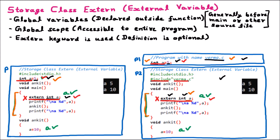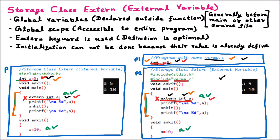The next point about the external variable is that whenever we are using the extern keyword, initialization is not possible. The reason is that their value is already defined. In the first example, we have said int a — one variable is declared with memory at address 301 and value 5. Now afterward we use the keyword extern, meaning we are using the external variable int a. Here if I say equal to 10, the compiler will show an error because the value is already initialized. So initialization is not possible when you are using the extern keyword.